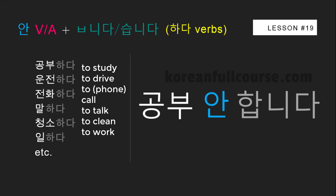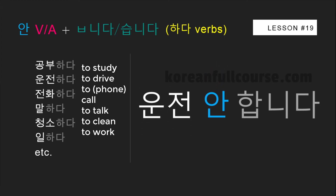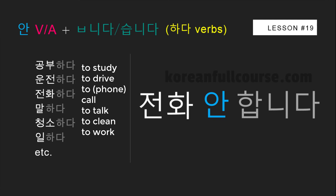So for 하다 verbs, the negation looks like this: 공부 안 합니다, 운전 안 합니다, 전화 안 합니다, and so on. Keep in mind that not all 하다 verbs represent a combination of a noun and the verb 하다.